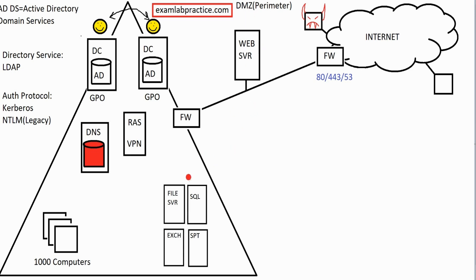The final topic in this section is virtualization. In the past, the mindset was to host everything yourself — your own data center with your own servers for file, SQL, Exchange, SharePoint, all of it. Then VMware expanded on virtualization. The term hypervisor — software that lets us emulate hardware — has been around since the 1970s; even mainframes sharing processing time was a form of virtualization. VMware was the biggest contributor to pushing this concept forward.